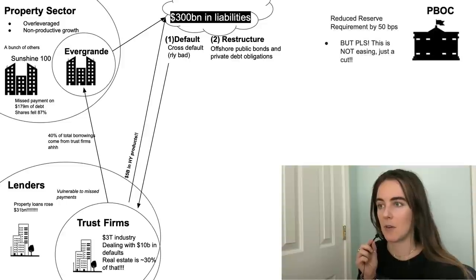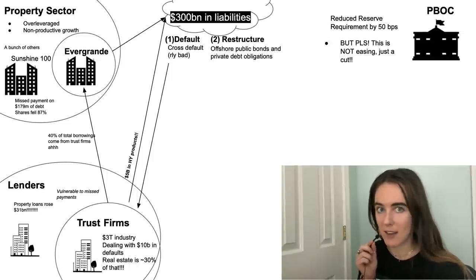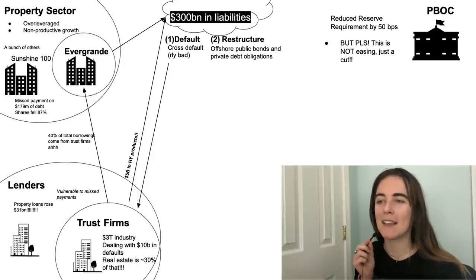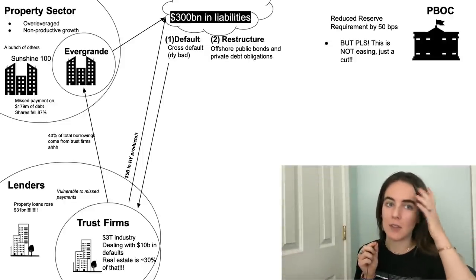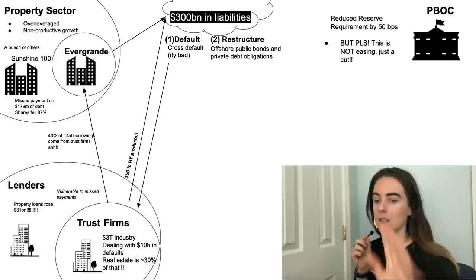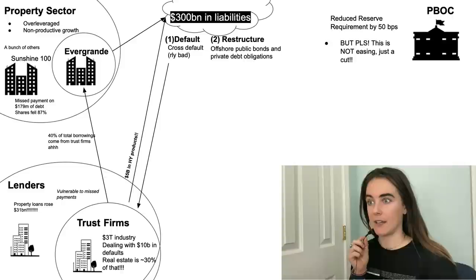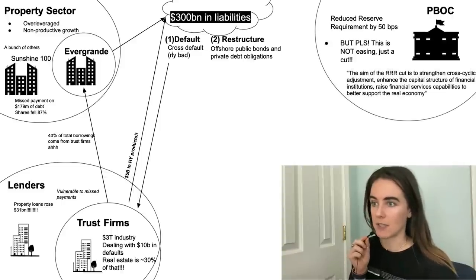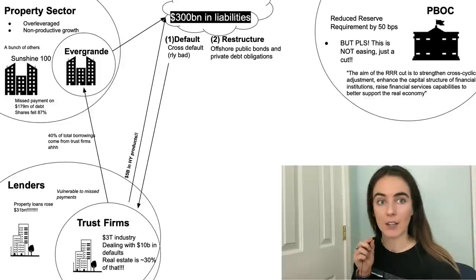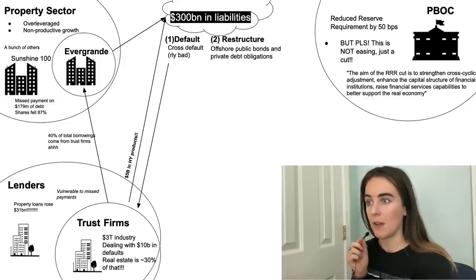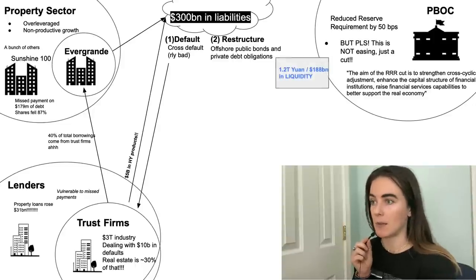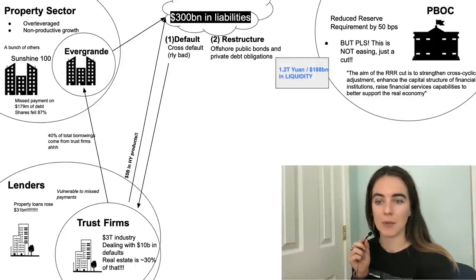There's also the People's Bank of China. They reduced the reserve requirement by 50 basis points — but this was not easing, it was just a cut. They don't want their monetary policy to be seen as easy; they want to show they're still being prudent. It's just to help with liquidity. The aim of the RRR cut is to strengthen cross-cyclical adjustment, enhance the capital structure of financial institutions, and raise financial services capabilities to better support the real economy. This freed up 1.2 trillion yuan, or 188 billion dollars, in liquidity.